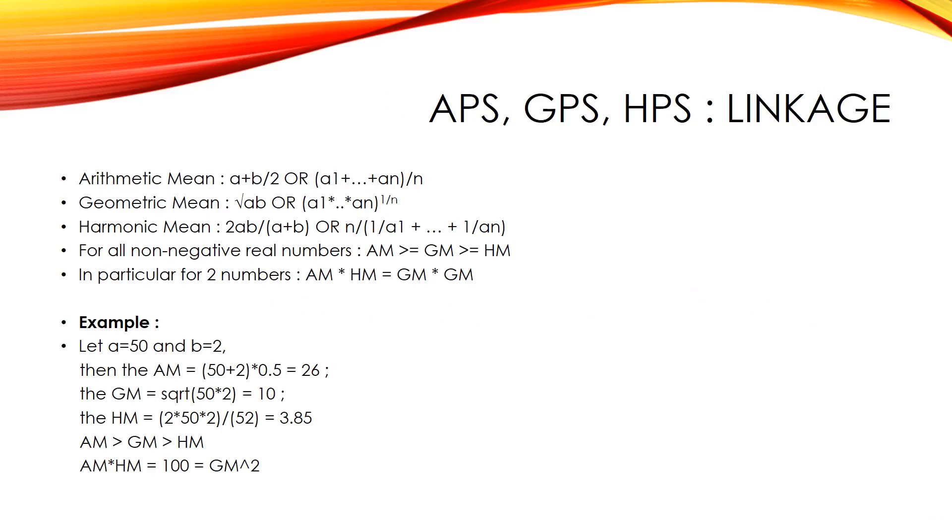APs, GPs, HPs linkage. Each progression provides us a definition of mean. Arithmetic mean is a plus b by 2 or a1 plus an by n. Geometric mean is root ab or a1 into an whole power 1 by n. Harmonic mean equals 2ab by a plus b or n by 1 by a1 plus 1 by an. For all non-negative real numbers, AM greater than or equal to GM greater than or equal to HM.